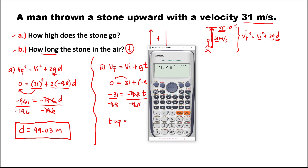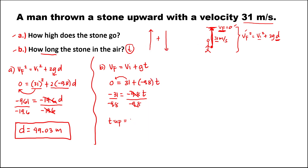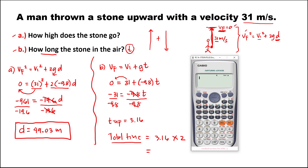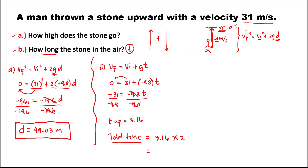Negative 31 divided by negative 9.8 gives the time up as 3.16 seconds. For the total flight time: 3.16 times 2 equals 6.32 seconds. So the total time of flight is 6.32 seconds.